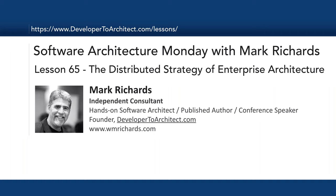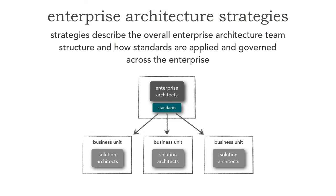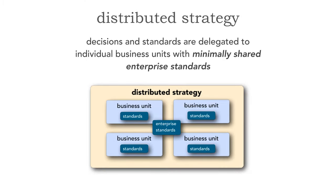Hello and welcome to Software Architecture Monday. My name is Mark Richards. I'm an independent consultant and also the founder of developertoarchitect.com. In today's lesson number 65, we'll take a look at the distributed strategy of enterprise architecture. In lesson 62, we saw that strategies describe the overall enterprise architecture team structure, whether it's centralized or distributed, and how standards — whether technology, architecture, methodology, or process related — are applied and governed across the enterprise. We saw that there were four basic kinds of strategies, and in this lesson we're going to be taking a look at the first decentralized strategy, which is called the distributed strategy.